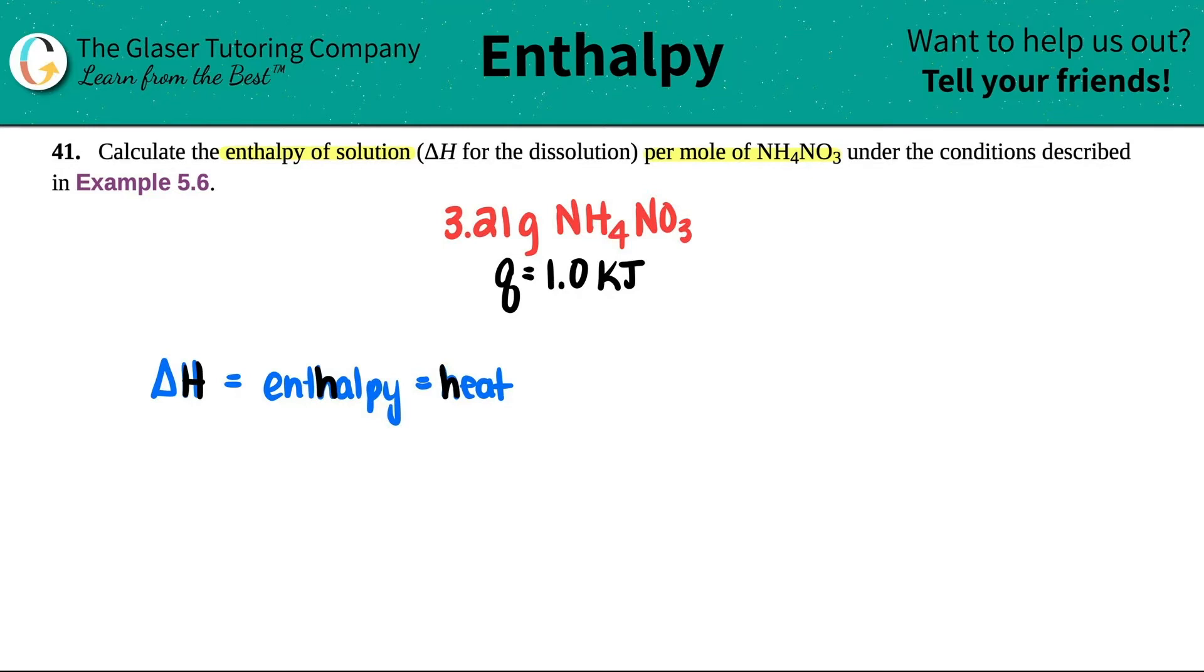Okay, now just know that enthalpy has very specific units. This is a standard state unit. And delta H is always kilojoules per mole. So that's basically what we want to find out. We want to calculate the enthalpy and enthalpy is always in kilojoules per mole.